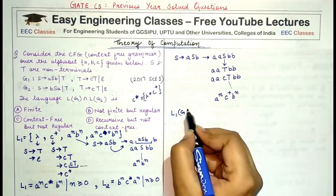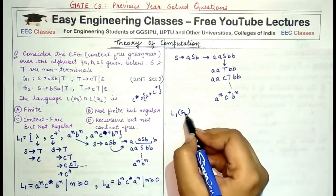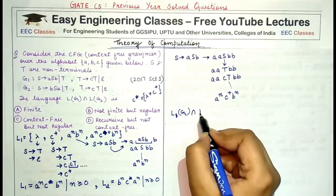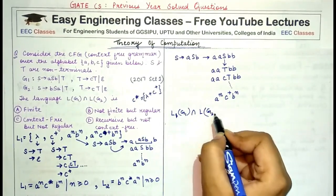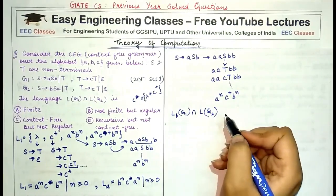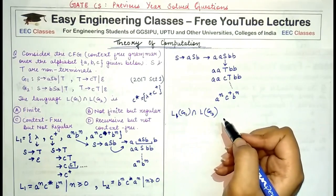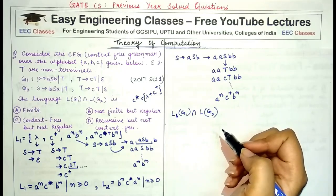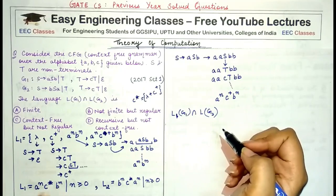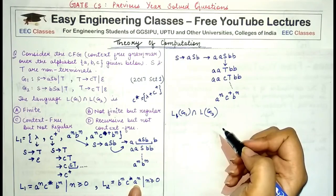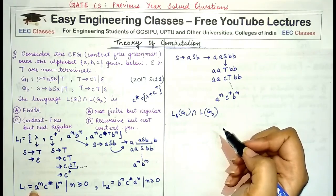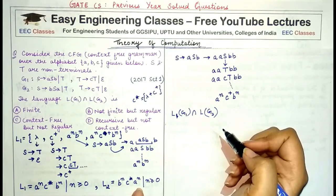Now take the intersection of L(G1) and L(G2). If you note carefully, there would not be a common string between the set of strings starting with a and ending with b, and the set starting with b and ending with a — they are completely separate.